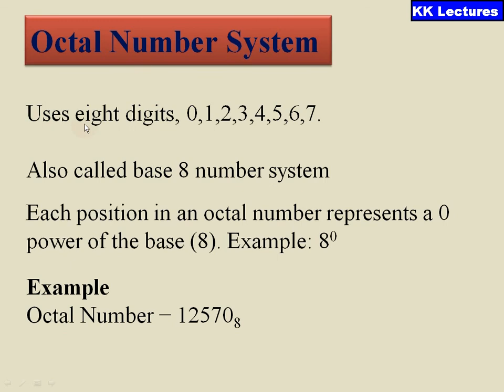This octal number system usually has a total of 0 to 7 digits. The total number of digits which it contains is 8, so it is also called the base 8 number system. Each position in the octal number system is represented as a power of the base 8. For example, the first digit is 8 power 0 and so on.